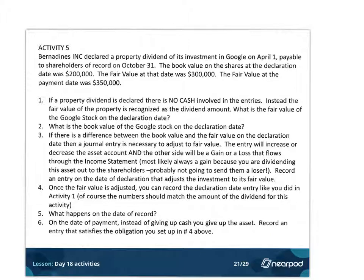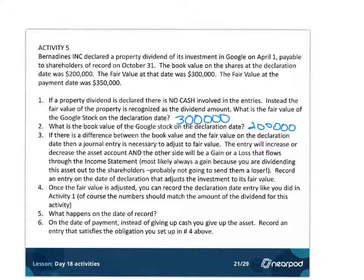Looking up in the problem, the fair value is $300,000. The book value, which you'd grab from the general ledger, is $200,000. If there's a difference between the book value and the fair value, you have to do a journal entry to adjust to the fair value. That journal entry will increase or decrease the asset account, with the other side being a gain or a loss that goes through the income statement.